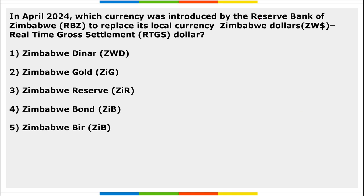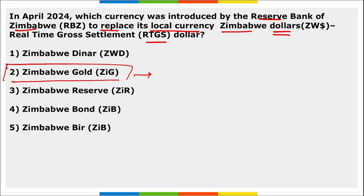Next: which currency was introduced by the Reserve Bank of Zimbabwe to replace their local currency, the Zimbabwe Dollar? It is Zimbabwe Gold — this is a gold-backed currency launched by the Reserve Bank of Zimbabwe recently, to replace the Zimbabwe Dollar (RTGS Dollar). These Zimbabwe Gold currency notes will be starting into circulation in the economy from 30th of April 2024.